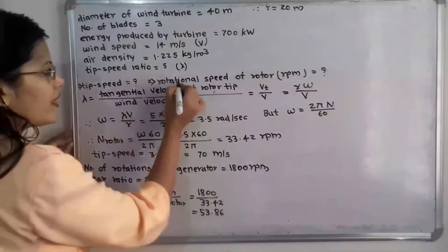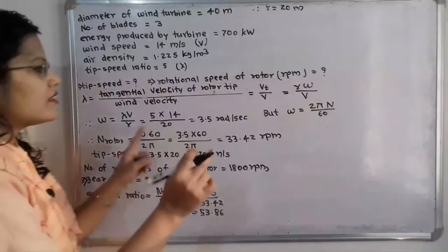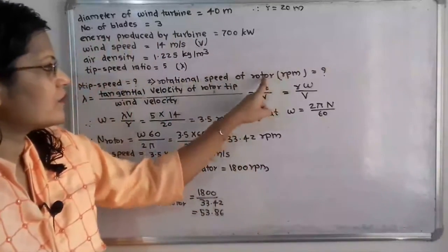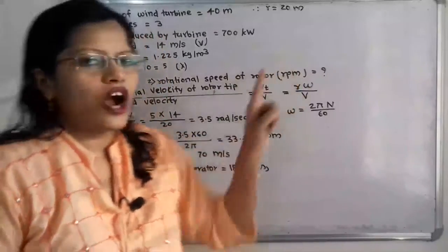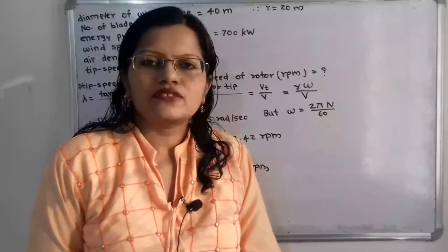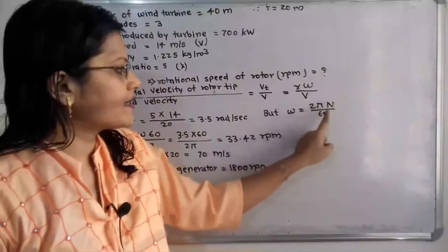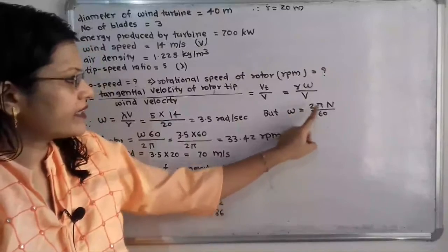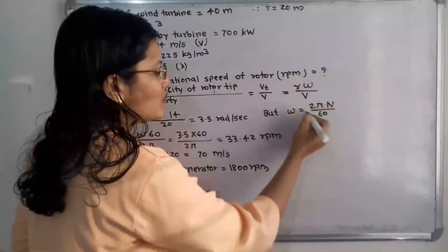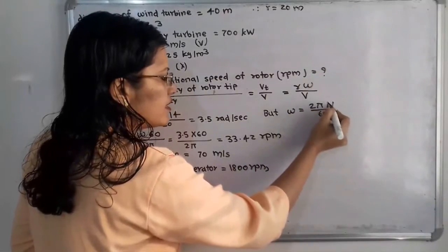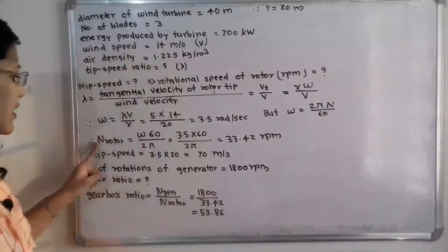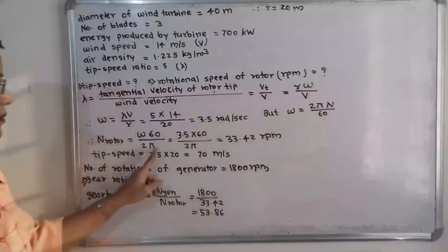Now we have to find the rotational speed of the rotor — that is, how many revolutions are there in one minute. We know that omega equals 2 pi N divided by 60. Using this formula we can find N. Therefore, N_rotor equals omega times 60 divided by 2 pi. This formula is important for converting angular velocity to rpm.